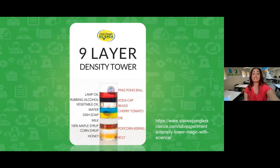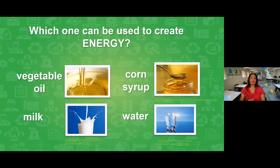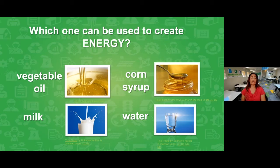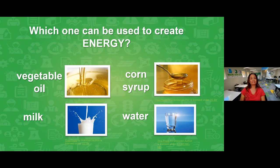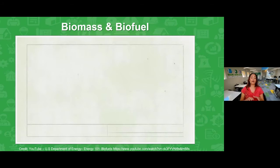That was pretty cool. If you want to see even more examples of density, look up videos about density columns — you'll find lots of neat experiments you can try with your family. Now, before we move on: one of those four liquids is considered a biofuel. A biofuel is a fuel created from plant material that can be used for energy, like in cars. Biofuels are made from biomass, which is leftover plant material from farming or forestry. Which one of those four do you think was a biofuel? If you guessed vegetable oil, you're right — yes, corn syrup has corn, but the oil is much more of a biofuel.